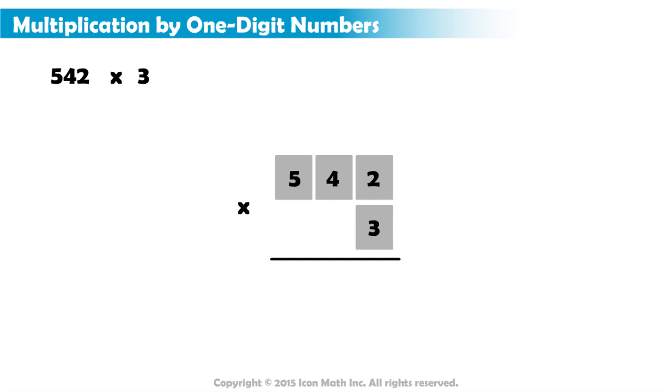Now, to multiply the numbers, we multiply the digit on the bottom, 3, by each digit on the top. We must always multiply from right to left.